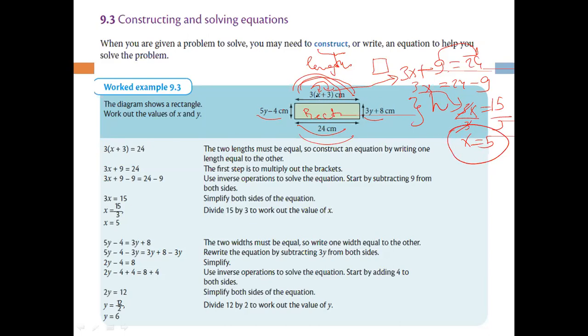Let's substitute x = 5 to check: 5 + 3 is 8, and 8 times 3 is 24. As you can see, the answer checks out.